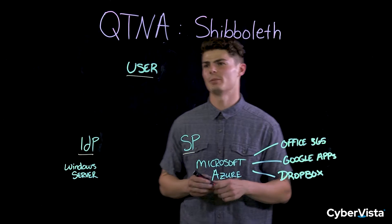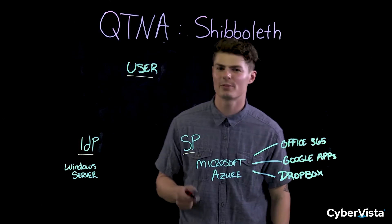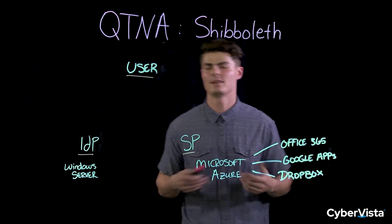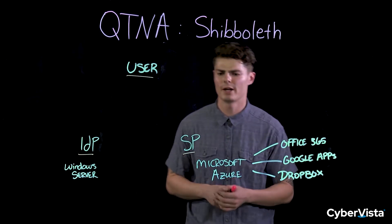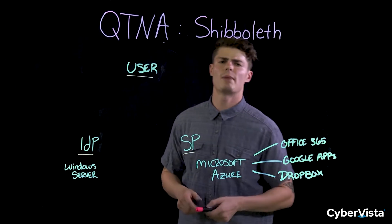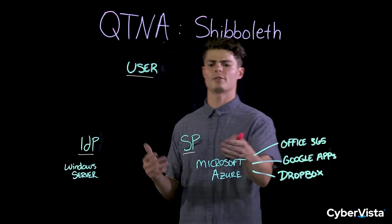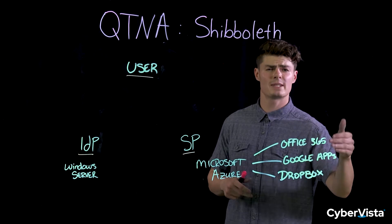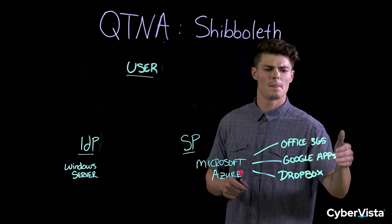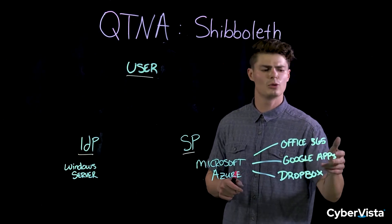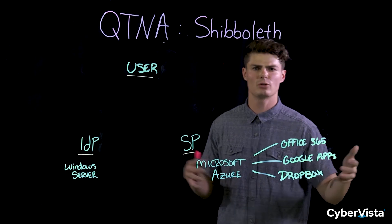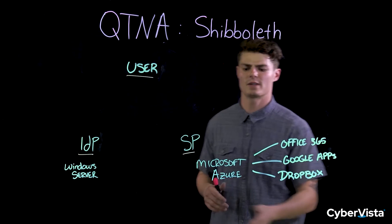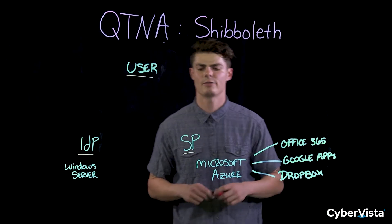So there's three main components to Shibboleth. We have the user, the service provider, and the identity provider. The user in this case is me — I'm on my laptop on Google Chrome. And I want to access Microsoft Azure. Microsoft Azure is a service provider because it provides services — it provides these protected resources like Office 365, your Google applications like Gmail, Google Drive, and Dropbox.